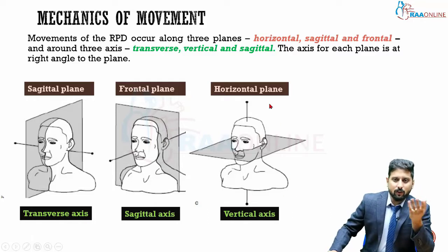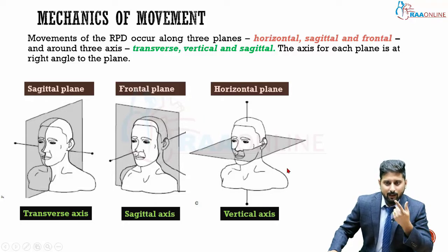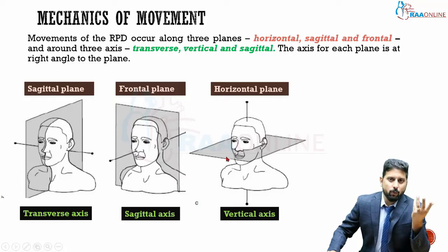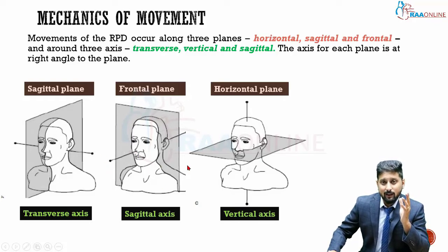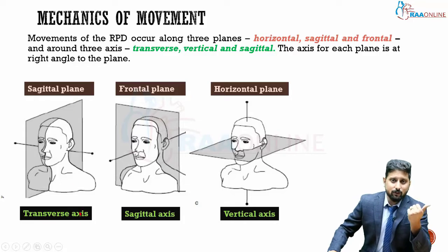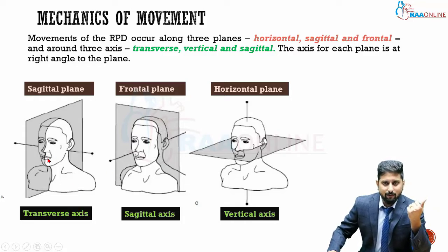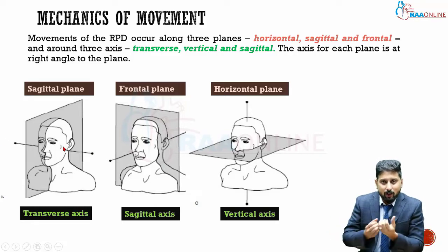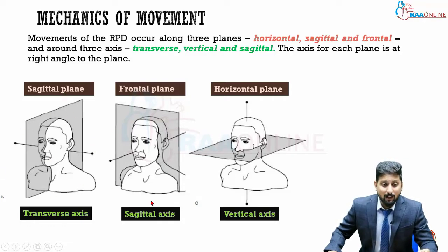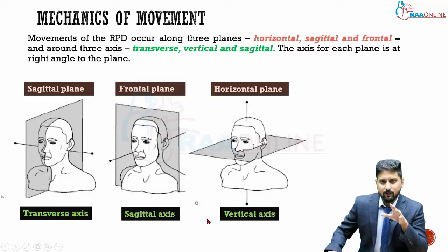Movement along the horizontal plane takes place around a vertical axis — like the Earth rotating around an imaginary vertical axis. For a frontal plane with a sagittal axis, imagine a windmill: its axle is sagittally oriented and the blades rotate along the frontal plane, similar to a table fan. For the sagittal plane and transverse axis, think of car wheels — two wheels attached by a horizontal axle rotating in a sagittal plane. Movement of the removable partial denture can similarly be explained via three planes and three axes.